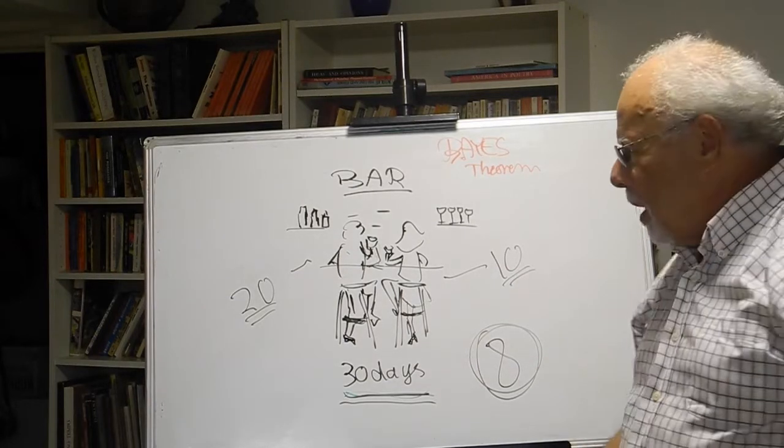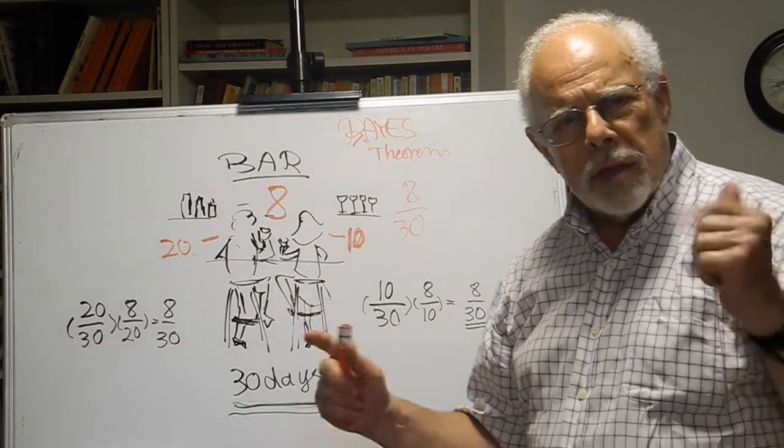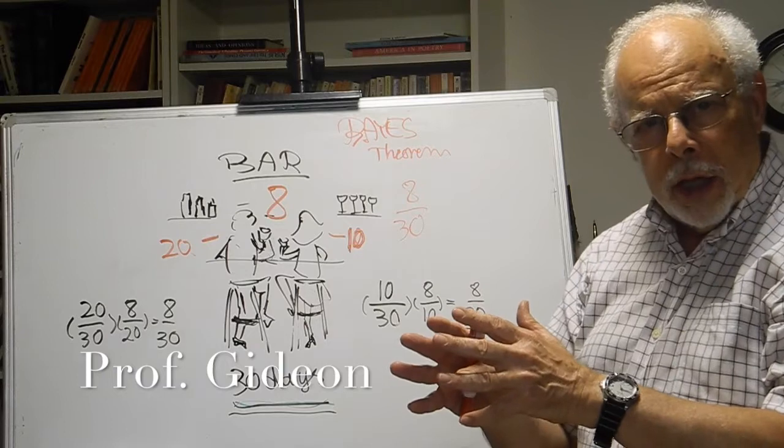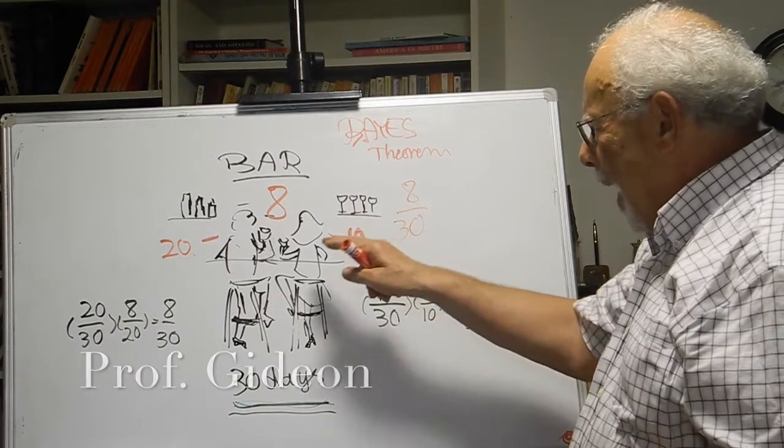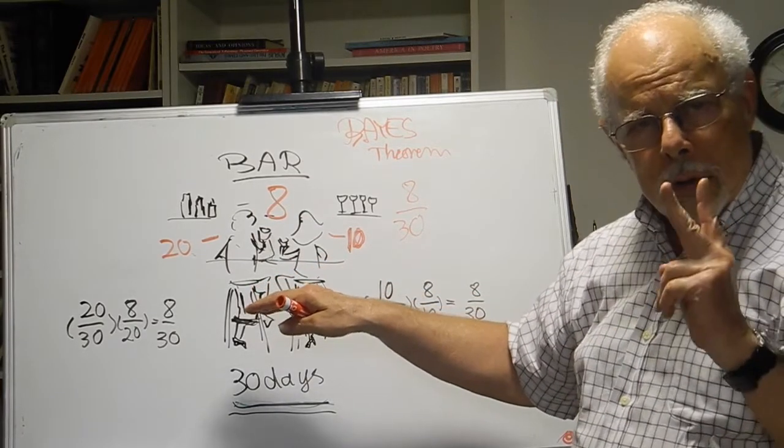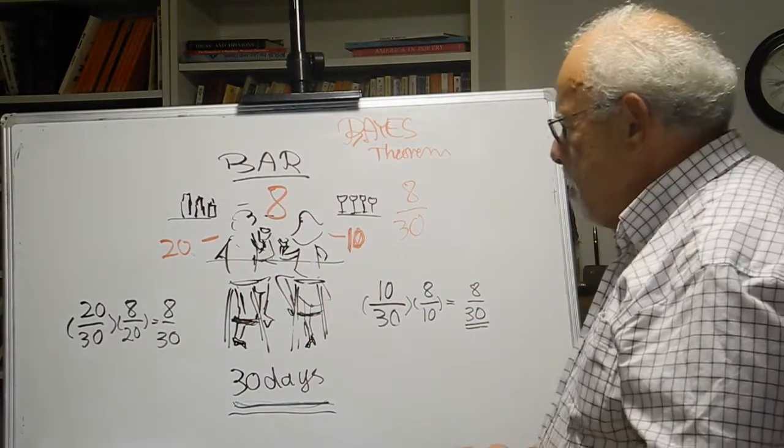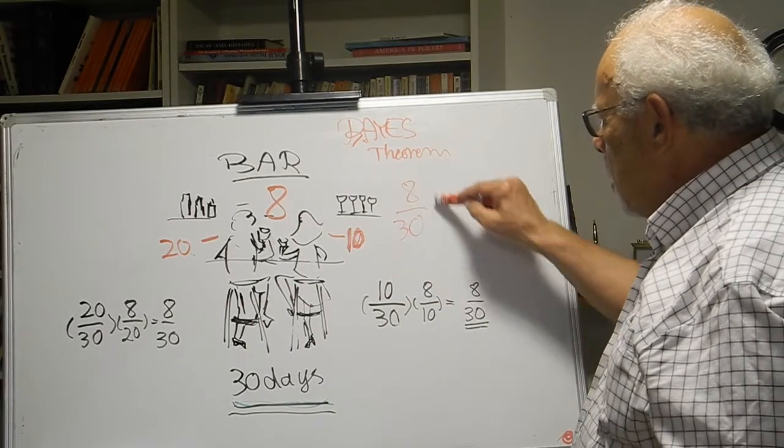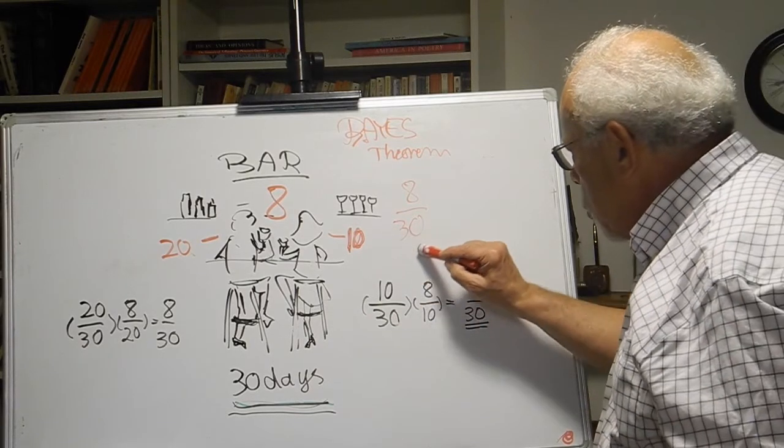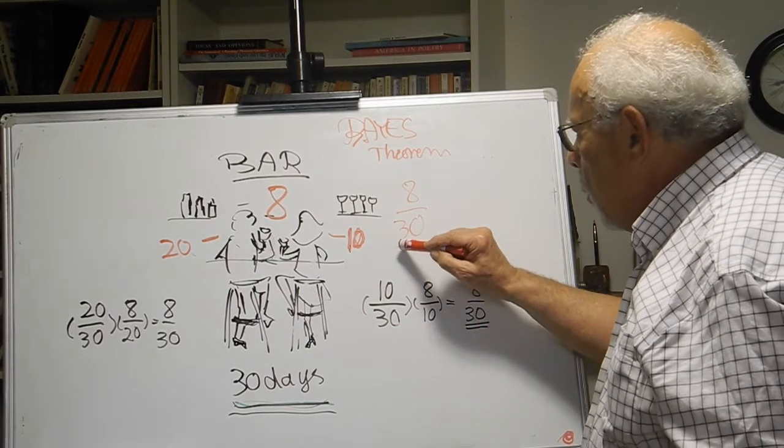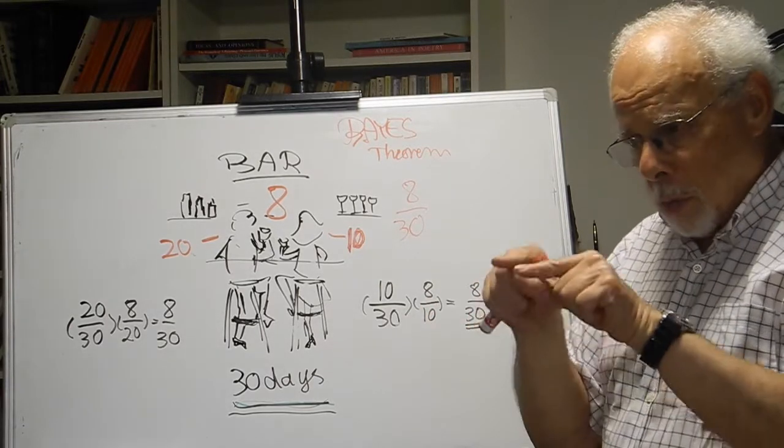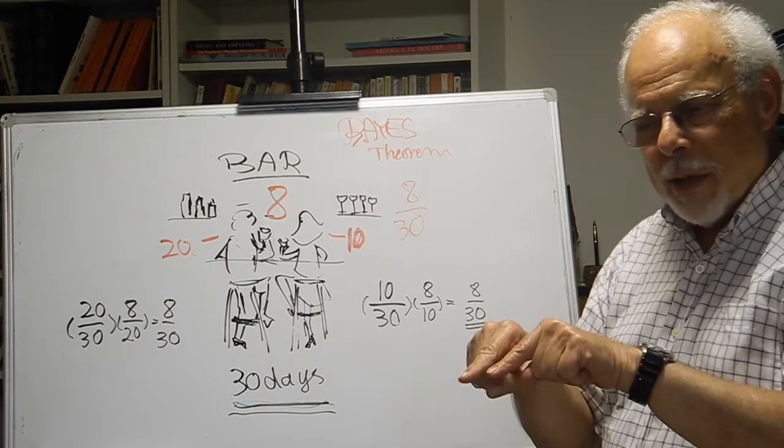How can we analyze this situation? We ask ourselves what is the chance on a given night for both Alice and Bob to be in the bar the same night. Now we know the result is 8 to 30, because out of the last 30 days there were eight days in which we noticed that both were at the bar at the same evening.